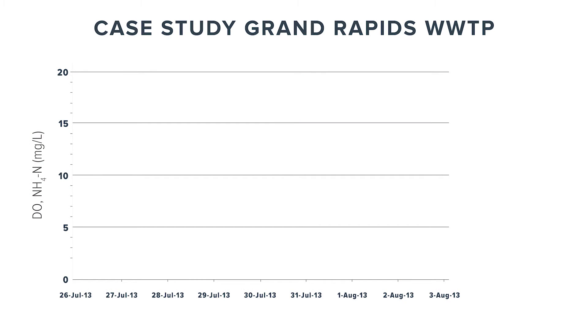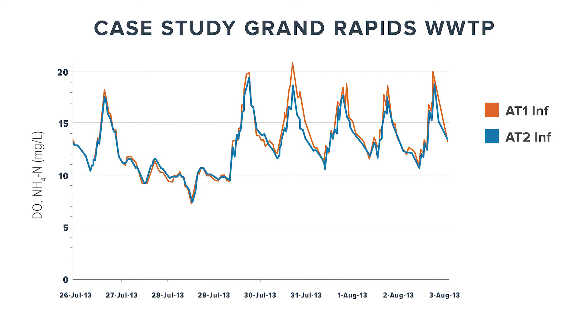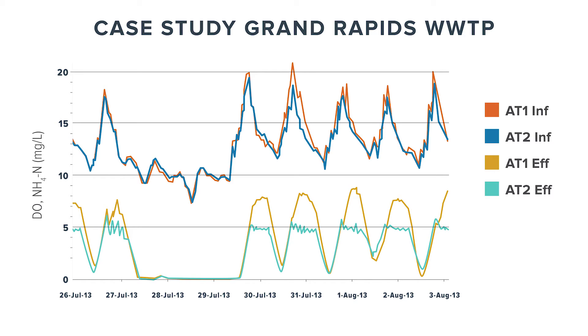As you can see in the graph, while the influent ammonium rates were actually fairly identical between the two aeration tanks, the effluent for aeration tank two — which had the probes — actually had a better effluent ammonium rate while reducing blower output. All of that ends up as a cost savings.